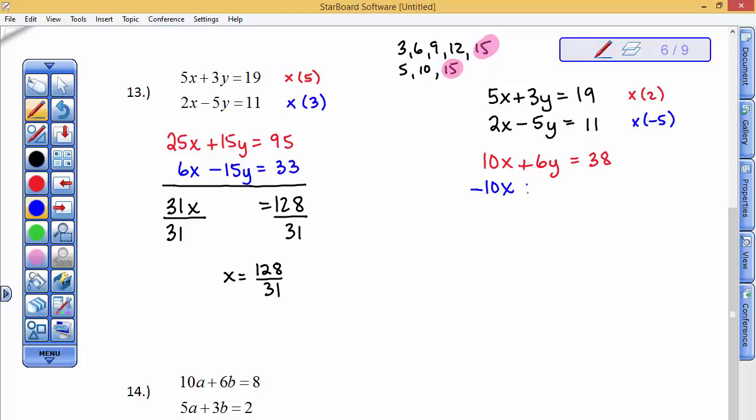And when I add these two equations now, I'm going to get 31y. Again, the x's disappear. 38 minus 55 is, I think, 17 negative. And then, I divide both sides by 31 to solve for y. And so, y is equal to a negative 17 over 31.